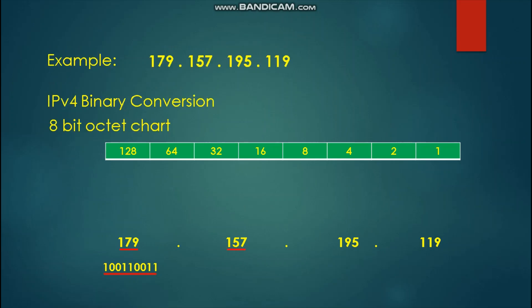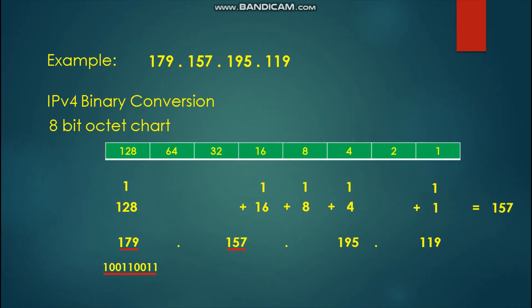Next, we solve for 157. We place binary 1 to 128, binary 1 to add 16, binary 1 to add 8, binary 1 to add 4, and binary 1 to add 1. These numbers when added give us a result of 157. The numbers not part of the addition will have a binary 0 assignment. The binary equivalent of 157 is 1-0-0-1-1-1-0-1.